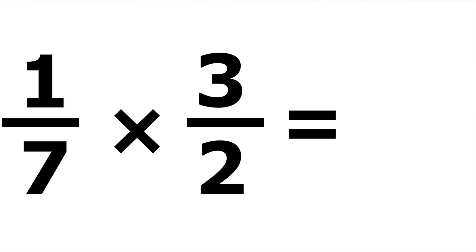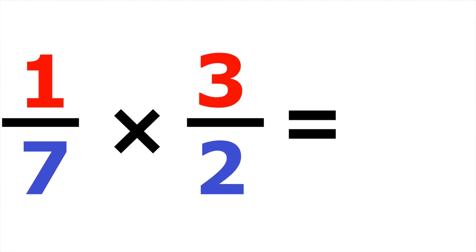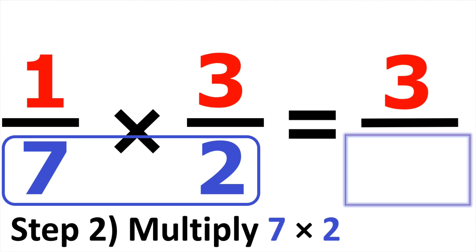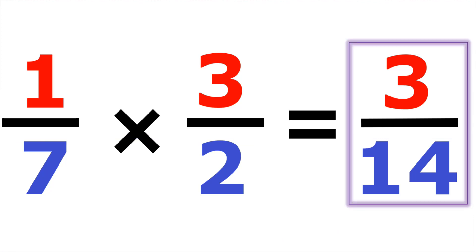Moving on to our fourth example, we have one-seventh times three over two. Same thing — numerators in red, denominators in blue — and we go straight across. Starting from our numerators, we have a one and a three, so one times three gives us three. Then moving on to our denominators, we have seven and two. Seven times two gives us fourteen. The answer is three over fourteen.